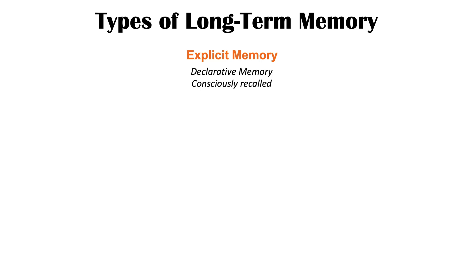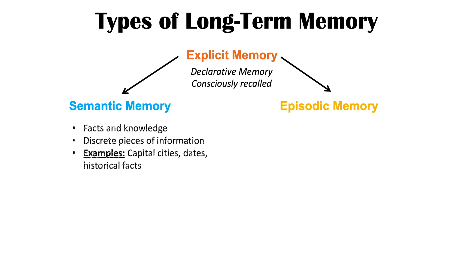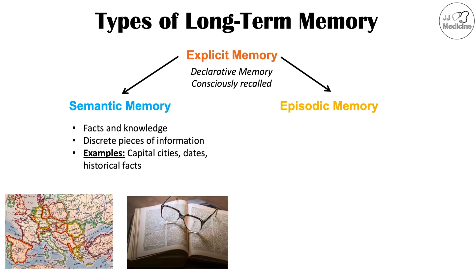There are two types of explicit memory. The first is semantic memory, and the second is episodic memory. Semantic memory is memory regarding facts and knowledge — oftentimes discrete pieces of information. Examples of semantic memory include capital cities, dates, and historical facts. If someone is able to state the capital of Poland, that is semantic memory — memory of a fact — and that would be considered explicit or declarative memory.